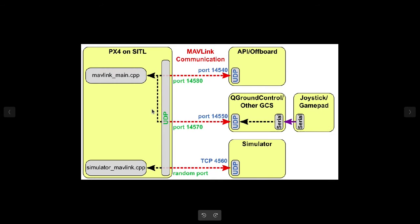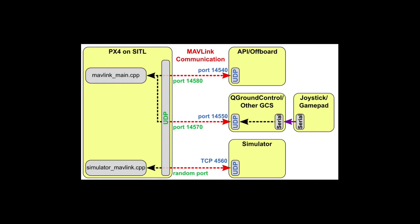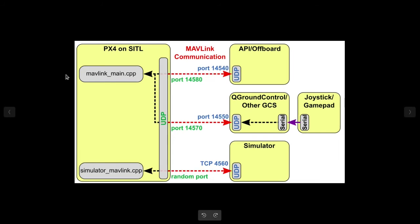In our simulation, PX4 communicates with ROS, QGroundControl, and Gazebo simulator through the MAVLink communication protocol. MAVLink is a protocol for micro air vehicles used to transmit data like vehicle position, vehicle orientation, GPS location, and speed. With PX4 on software-in-the-loop, it communicates with other parts of the software simulator through a UDP layer using MAVLink.